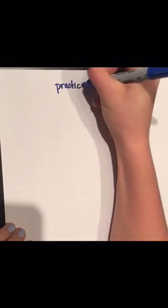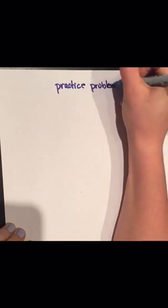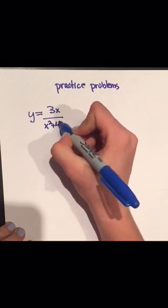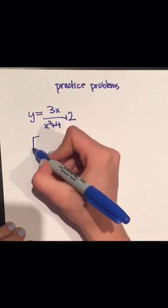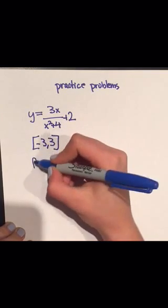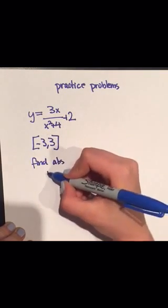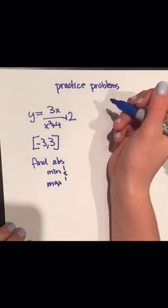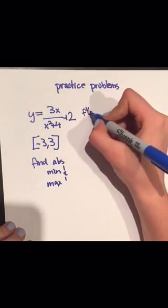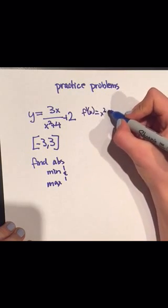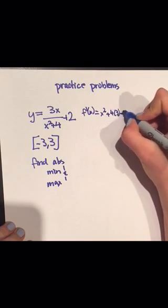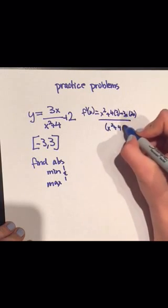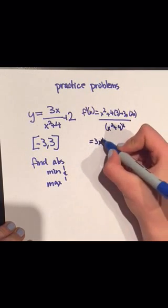Let's do some practice problems. This would be a typical practice problem: you are given a function and an interval, and told to find the absolute maximum and minimum. Our first step is to find the derivative of the function. Here, that's just going to be a quotient rule — make sure that you carry it out properly and don't make any errors in the simple part of deriving it.